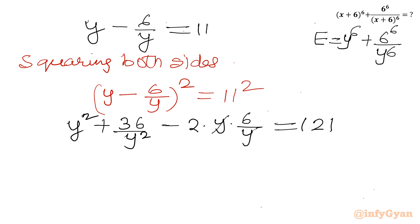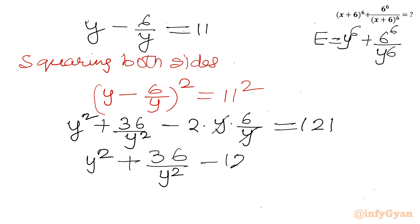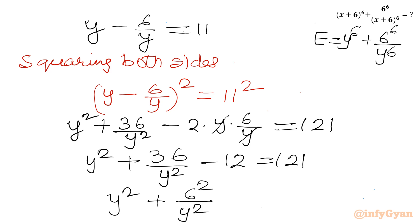Now we can cancel y with y in the middle term. So it becomes y² plus 36/y² minus 12 equal to 121. Writing 36 as 6² over y², and taking minus 12 to the RHS: y² plus 6²/y² equal to 121 plus 12, which is 133.